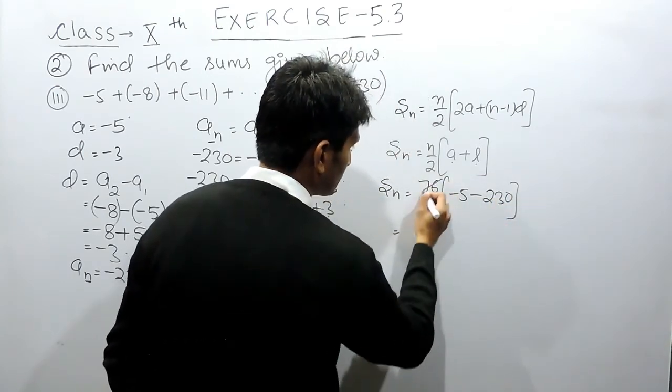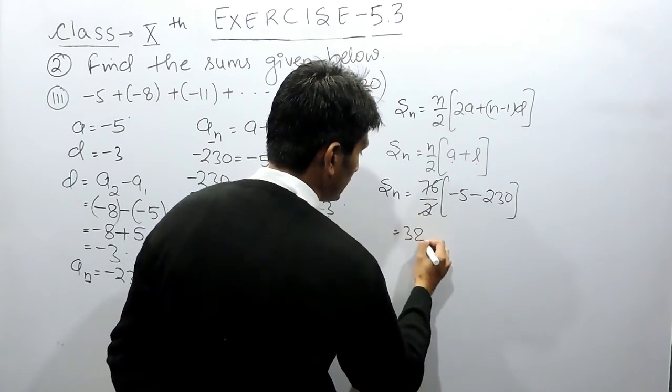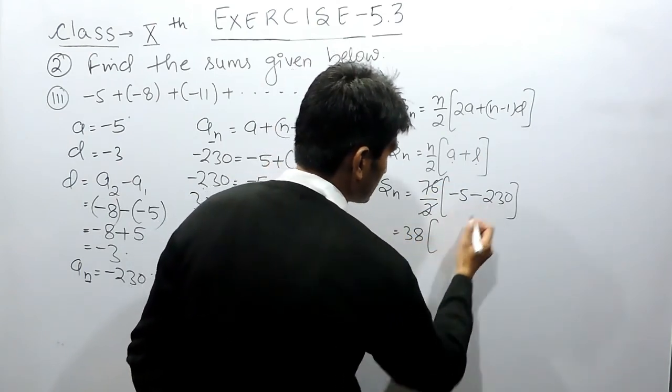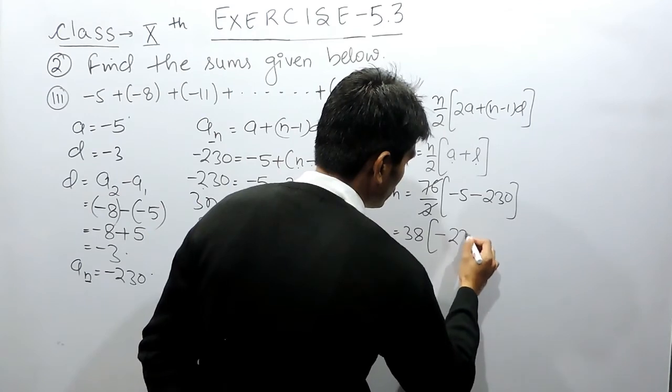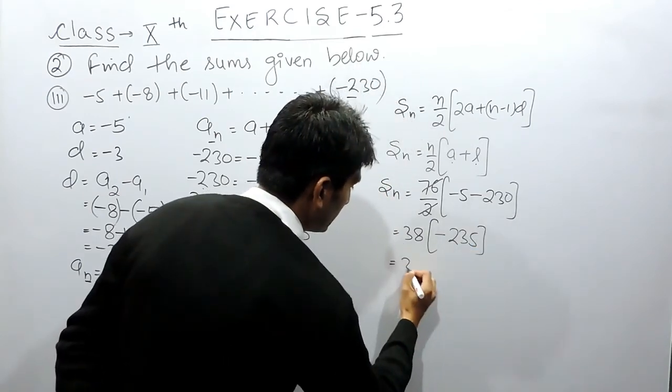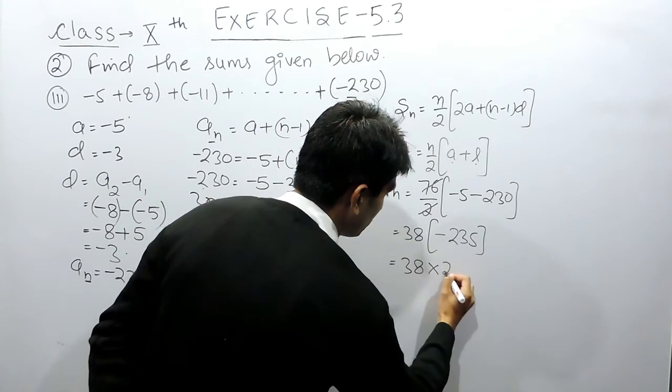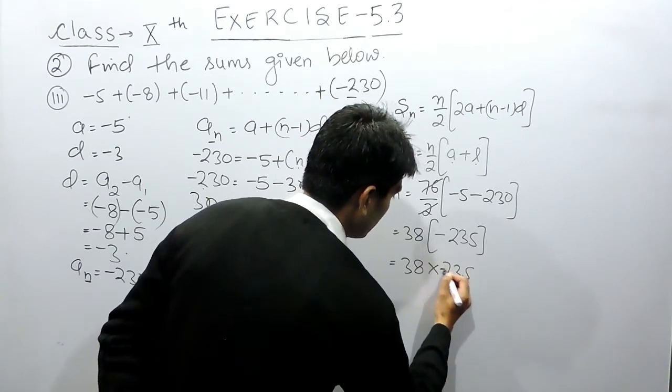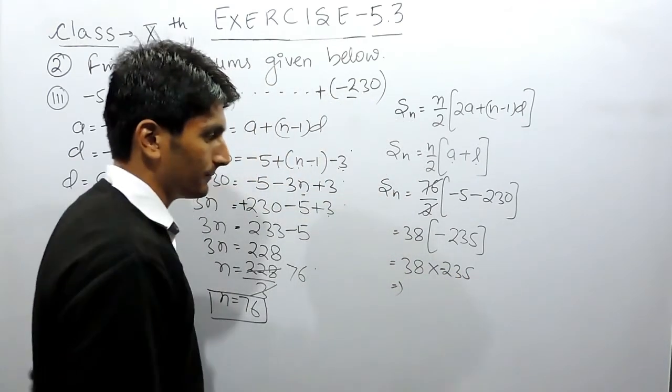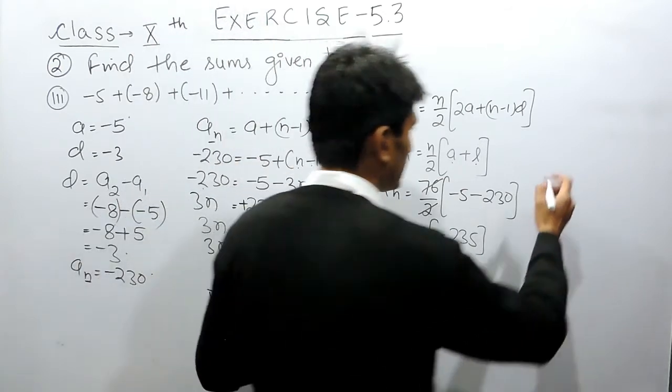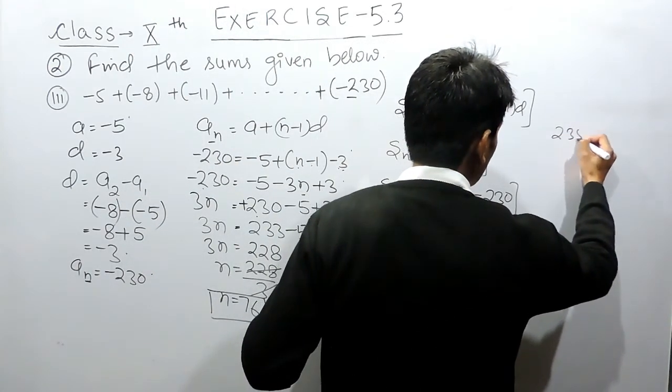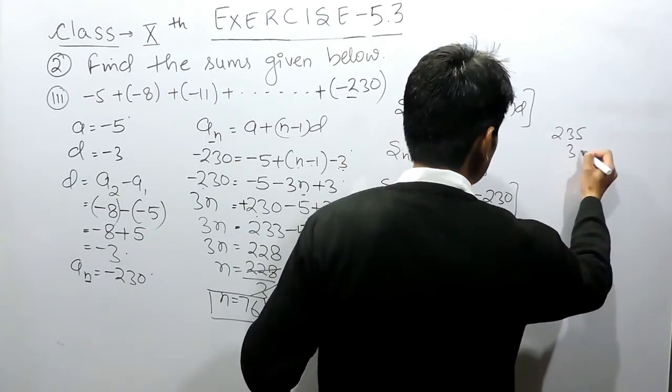Now this can be cancelled. 76 divided by 2 is 38, and -5 + (-230) = -235. Now if I multiply 38 by -235, I will get my answer. Let's multiply: 235 multiplied by 38.